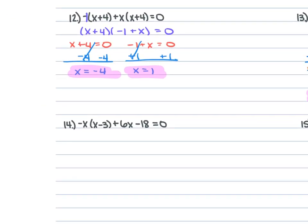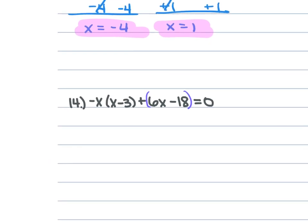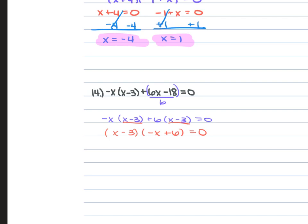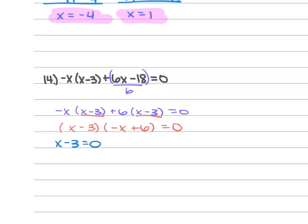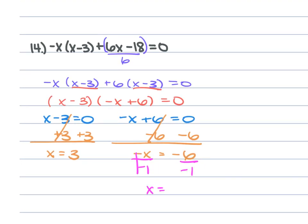For problem 14, we have −x(x − 3) + 6x − 18 = 0. Factoring a 6 out of 6x − 18 gives 6(x − 3), so we have −x(x − 3) + 6(x − 3) = 0. Now factor as (x − 3)(−x + 6) = 0. Setting each equal to 0: x − 3 = 0 gives x = 3. For −x + 6 = 0, subtract 6: −x = −6, divide by −1, so x = 6.